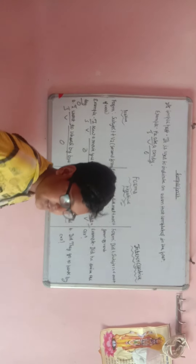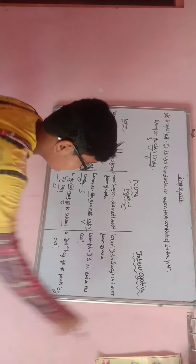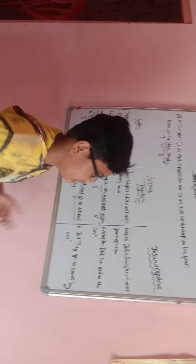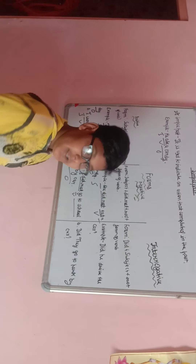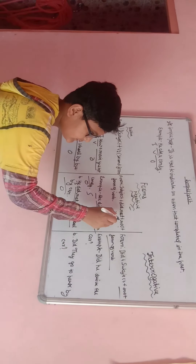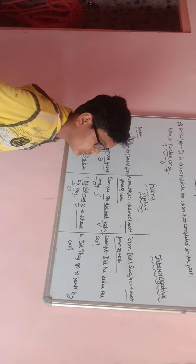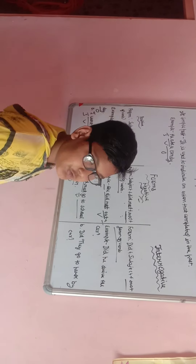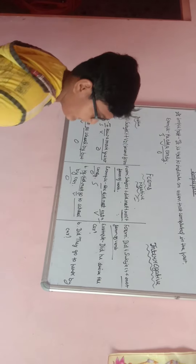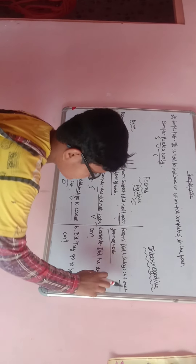Next is the interrogative form of simple past tense. The form is: did plus subject plus root form of verb. In the interrogative form also we use the root form of verb — same as negative. Do not confuse, because both negative and interrogative use the root form of verb.